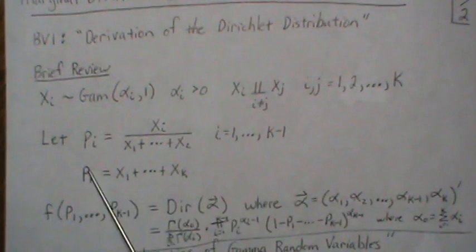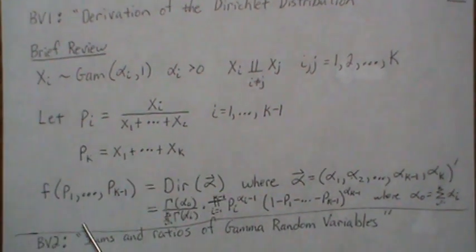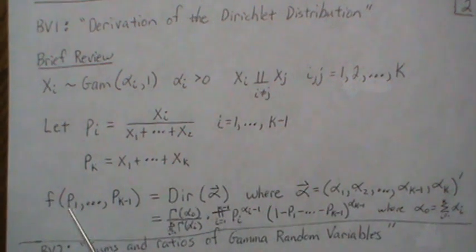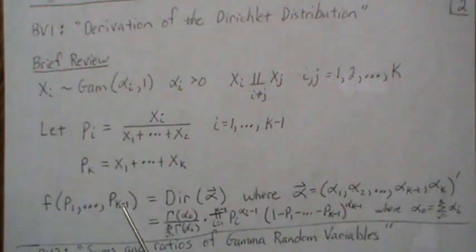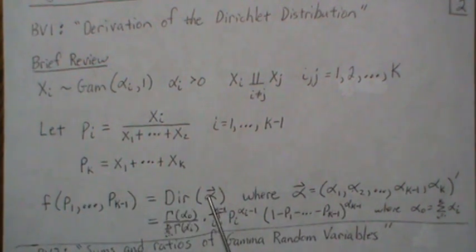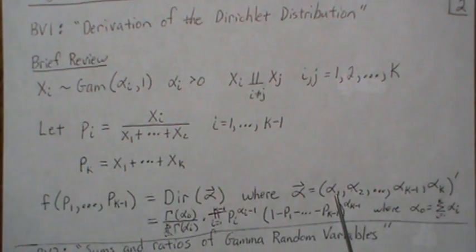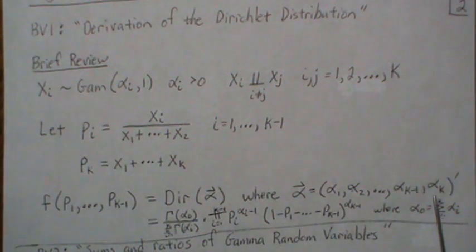And then we found the joint density of those and then we had to integrate out PK, and then we found the distribution of P1 through PK minus 1, and that was a Dirichlet distribution with gamma. And this is a vector and the vector is the parameters, alpha 1, alpha 2 through alpha K.